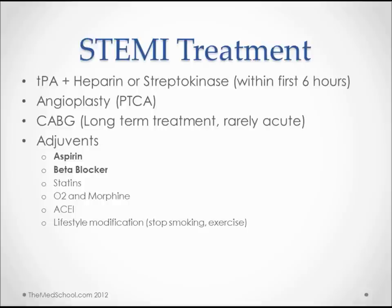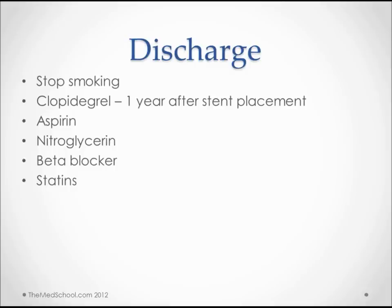CABG is going to be used rarely in an acute situation but to help prevent future events. These patients are going to get aspirin and beta blockers always. Statins are used to improve lipid profiles, but there's some evidence that in MI patients they're actually more helpful in decreasing inflammation, which may be why they reduce mortality and morbidity. O2, morphine, and ACE inhibitors are given to reduce remodeling. Of course, we also want patients to stop smoking and exercise. At discharge, if they received a stent, they need clopidogrel for a year, plus aspirin, nitroglycerin, beta blockers, and statins.